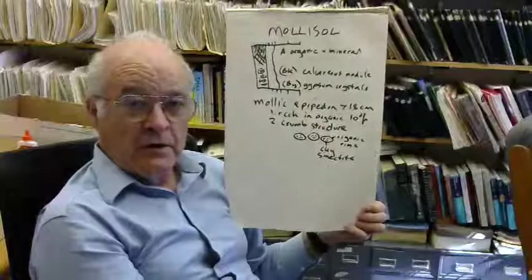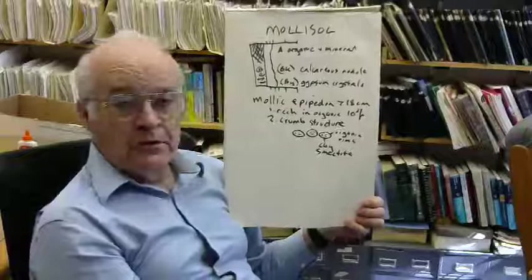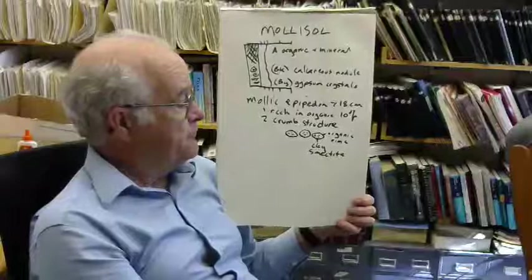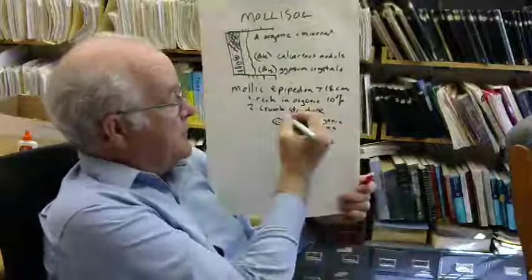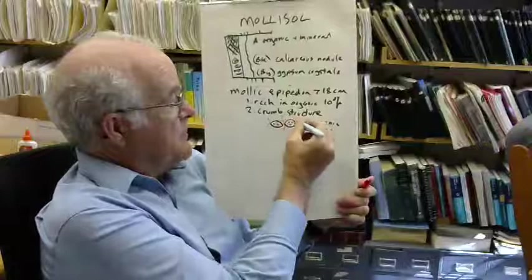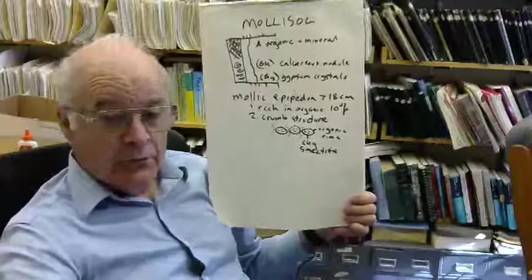Much of this crumb structure is actually the fecal pellets of soil fauna, particularly earthworms. Charles Darwin was very keen on this and wrote a book on the subject on the formation of soil by worms. And vermiculture is still a big thing in creating fertile soil material. The organic rims also come from the exodus of roots, because grasses have these fine, millimetric size, finely branching roots. The smectite clay is very fertile, rich in nutrients: magnesium, calcium, sodium, and potassium.